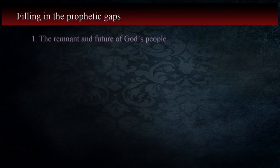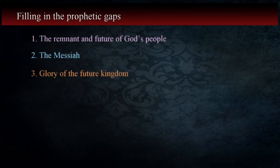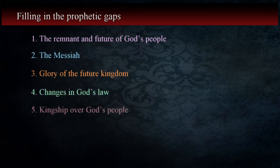When we try to explain or understand the following points — the remnant and future of God's people, the Messiah, the glory of the future kingdom, changes in God's law, and kingship over God's people — we have to do so taking care to realize that the law would end and be replaced, and the kingdom would be transformed in relation to its physical nature. Let's take a look at each of these areas.